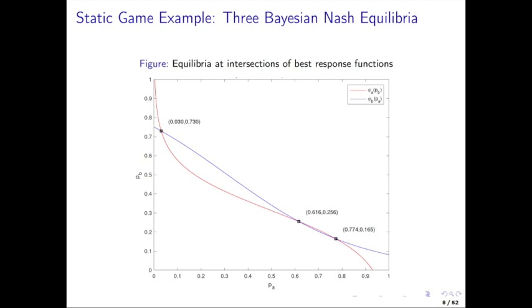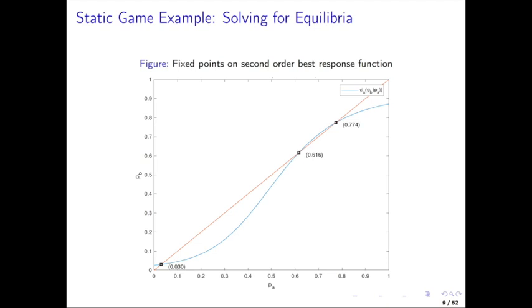This is something we're not used to with single-agent models, where there's only one solution to the Bellman equation. Here you have three solutions to the model that are equally good given the imposed structure. So we have three equilibria in this case. How do we find those three equilibria?